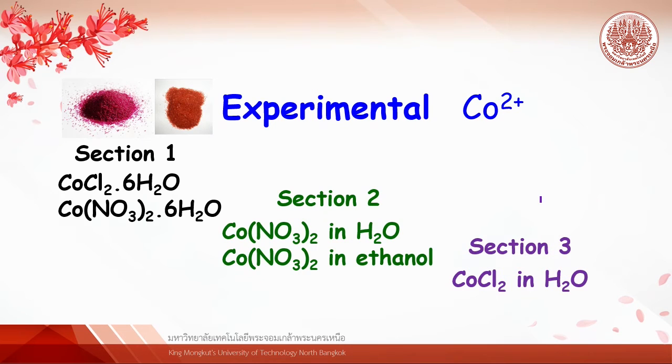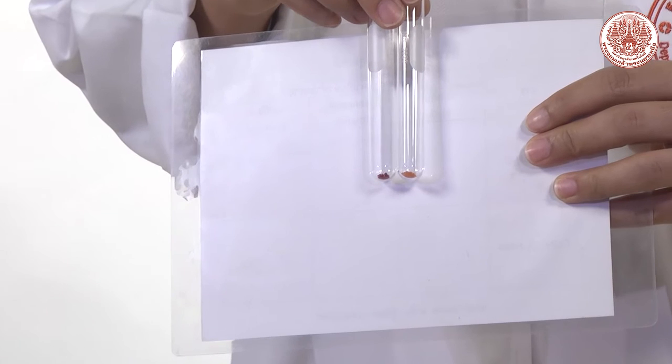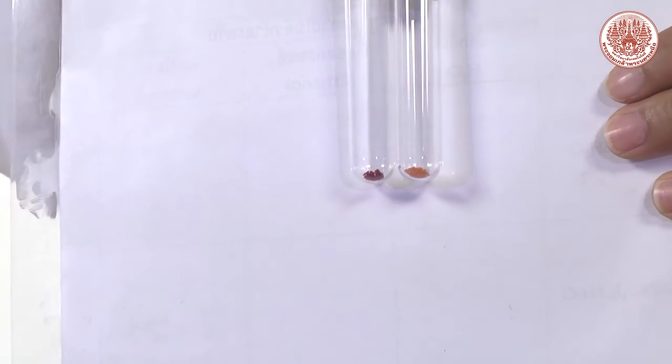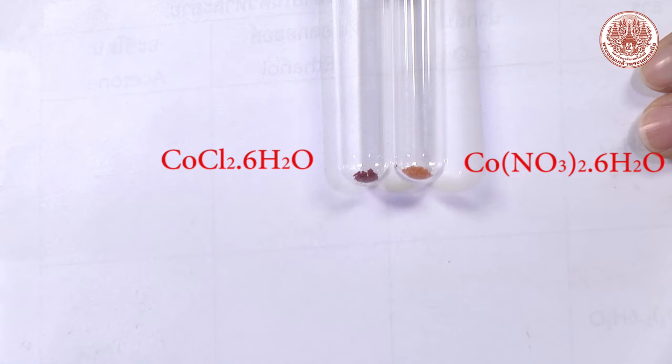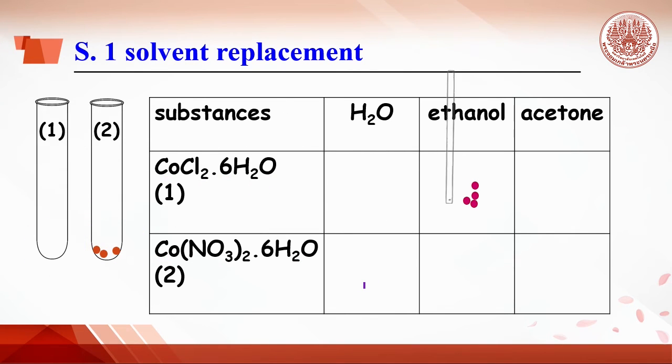However, today we use many types of cobalt solutions. So please look more carefully before doing the experiment. Section 1: Observe the crystal of cobalt chloride hexahydrate and cobalt nitrate hexahydrate. After that, pour the cobalt chloride on the plastic sheet and use stirring rod. Separate the crystal into three parts. Do the same for cobalt nitrate hexahydrate.